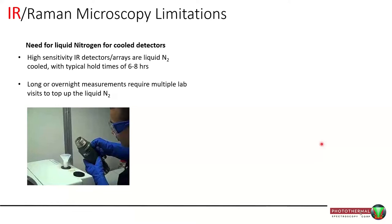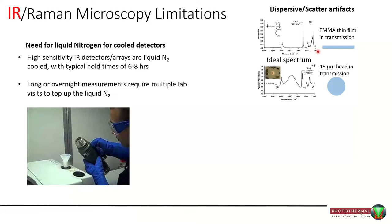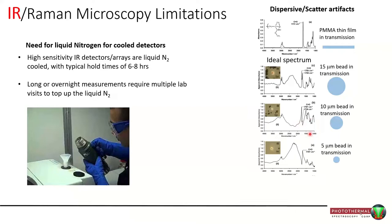These systems nearly always require liquid nitrogen cooling, which is a hassle. But what I consider underappreciated issues with traditional FTIR and QCL microscopes are dispersive and scatter artifacts. Imagine a PMMA thin film measured in transmission — you get a lovely spectrum with a flat baseline and symmetric peaks. But take the exact same material as a 15 micron bead and measure it in transmission, and the spectrum looks very different: baseline offsets, weird baselines, shifted and split peaks. Change the shape while keeping the material the same and the spectrum looks different yet again. It really shows how spectra can be very dependent on particle shape, size, and surface roughness in addition to any chemical differences.